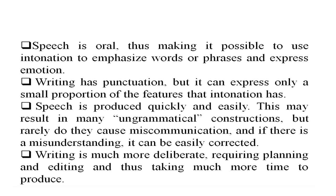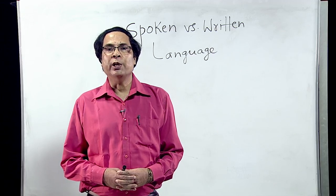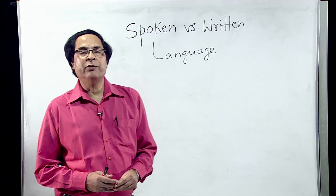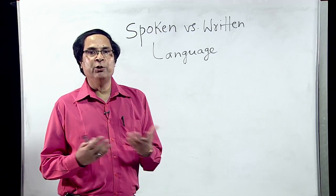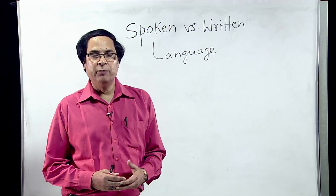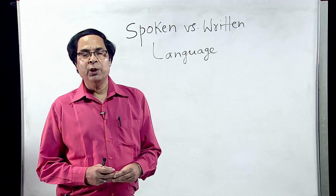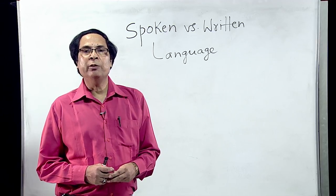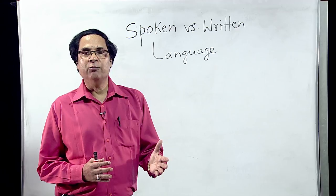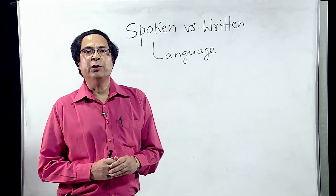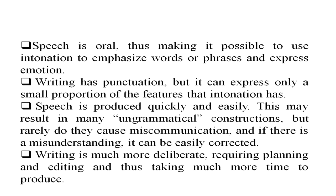Speech is oral, making it possible to use intonation to emphasize words or phrases and express emotion. In Tibeto-Burman languages spoken in Manipur, Nagaland, Mizoram, and other northeastern states, tone exists at the word level and differentiates meaning. If you raise your pitch you get one meaning; if you lower it, another. In Manipuri, for example, the word 'oo' — depending on tone — means either 'blood' or the thatch used to cover a house. Writing has punctuation but can express only a small proportion of the features that intonation has.